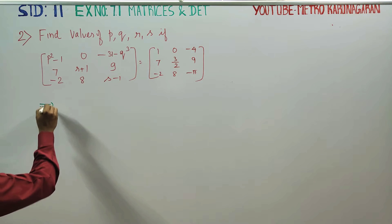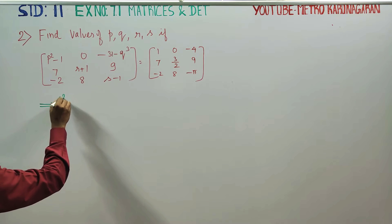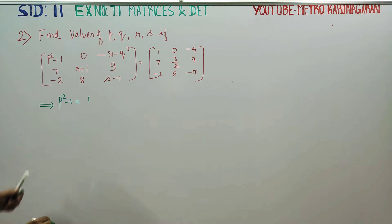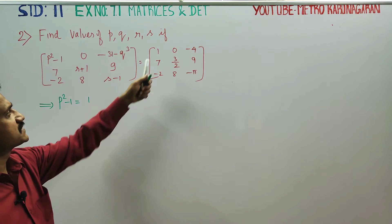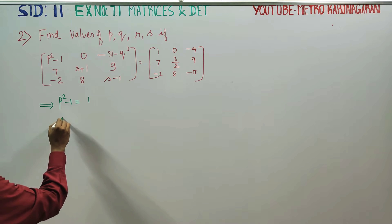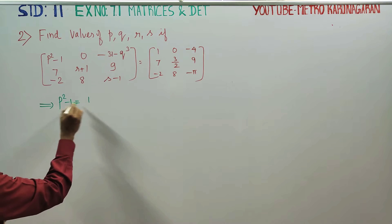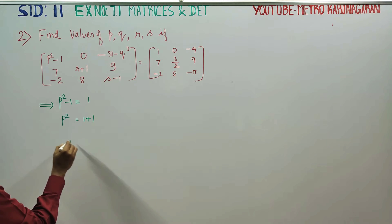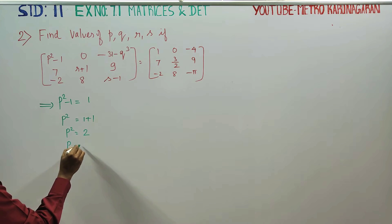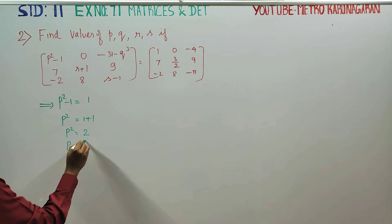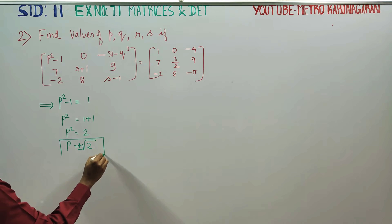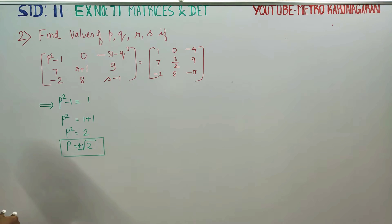First element P squared minus 1 is equal to 1. First element is equal to first element. P squared minus 1 is equal to 1. P squared is equal to 1 plus 1 is equal to 2. P is equal to plus or minus square root of 2. This is the first result.